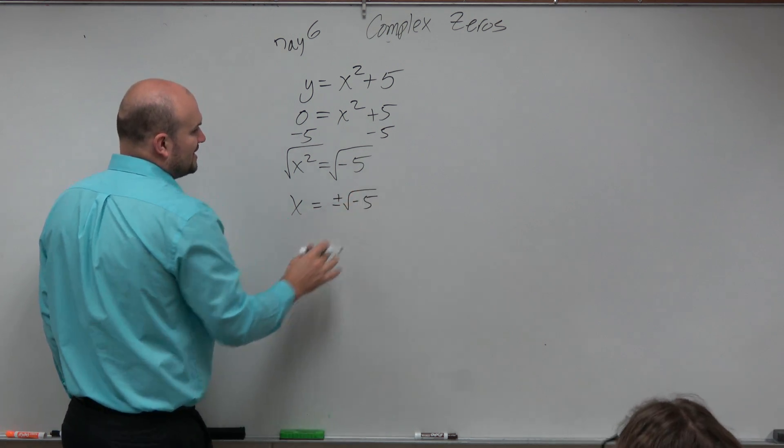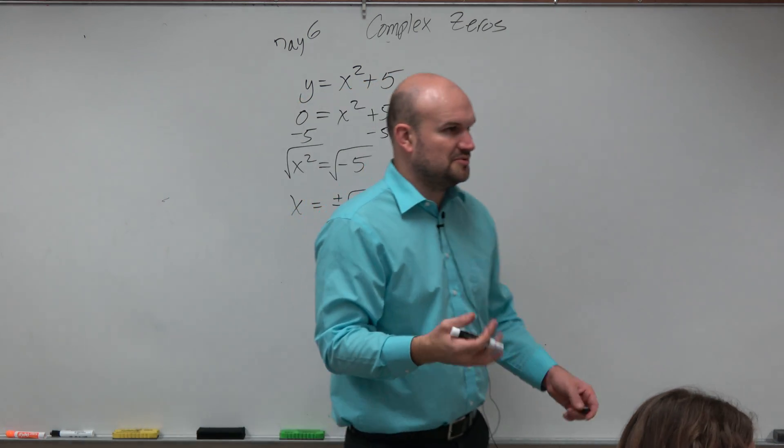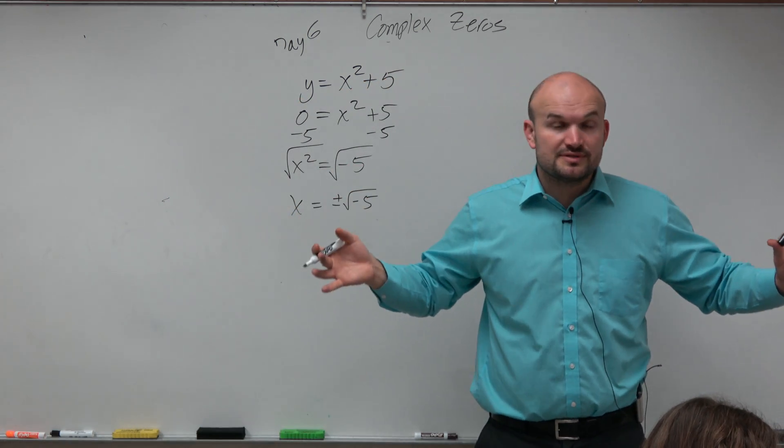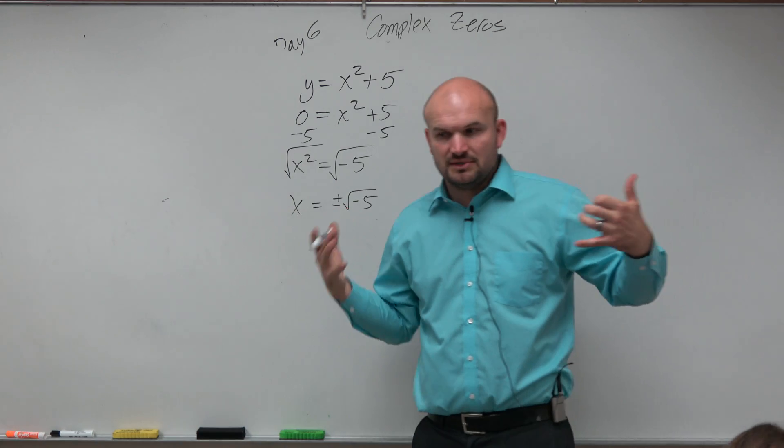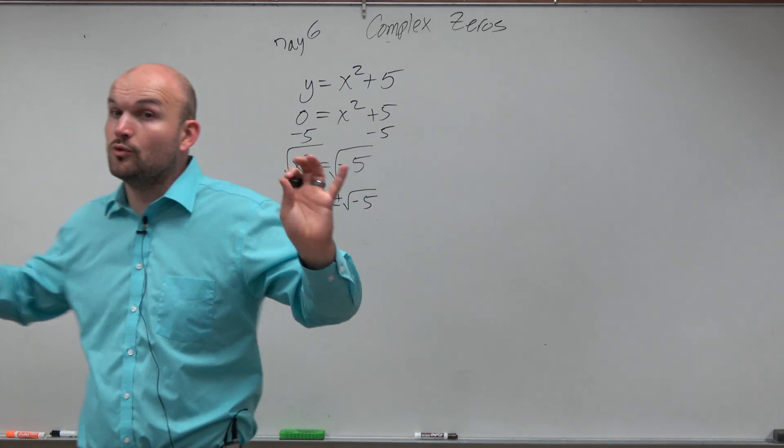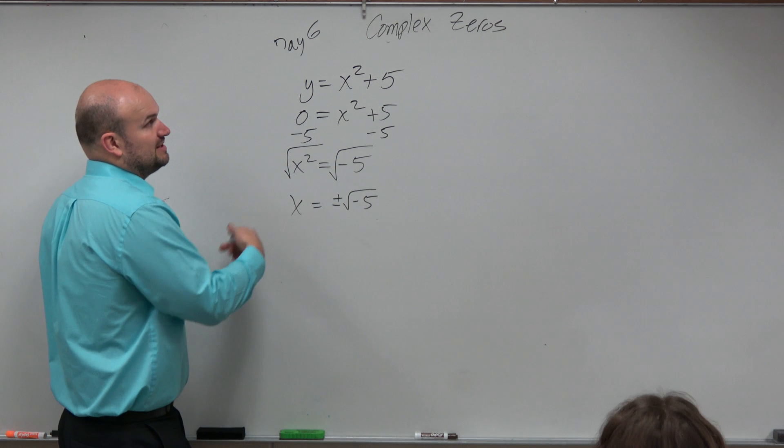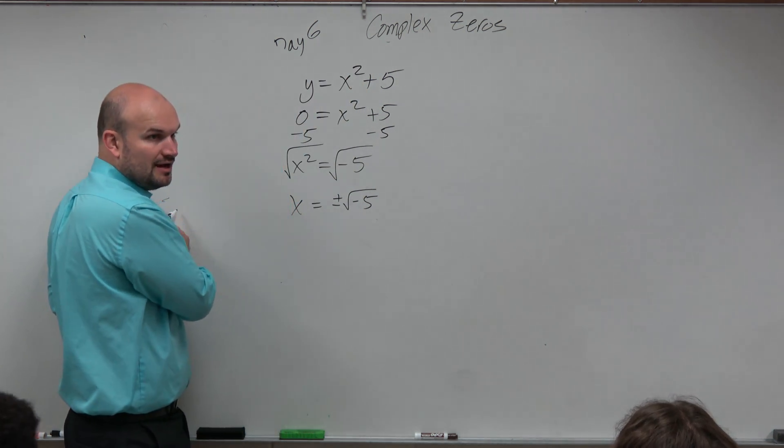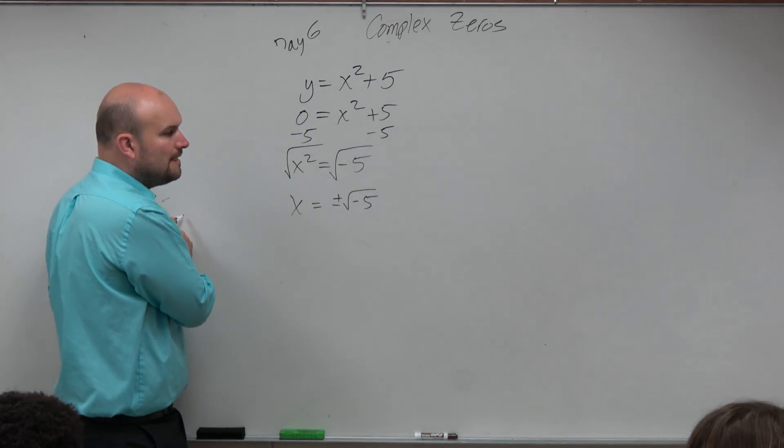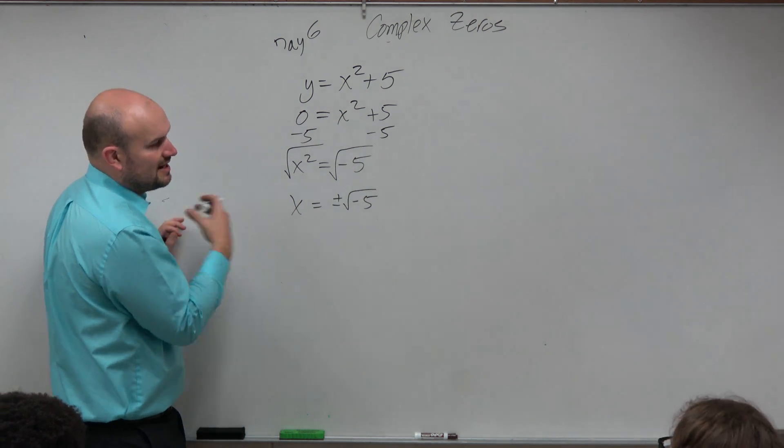Up to this point in this class, if we had something like this, we would say it's no real roots. That is very commonly used: no real roots or no real zeros. However, today we're going to talk about complex zeros. How can we use that or how does that make sense?